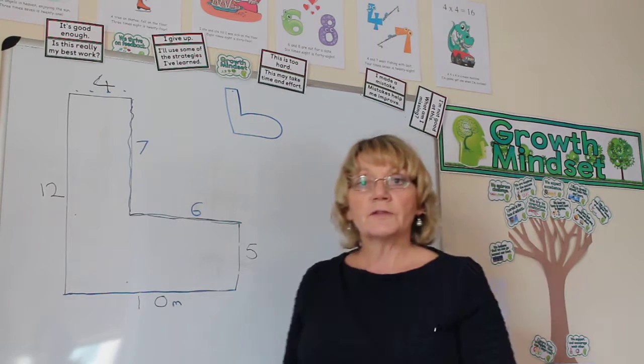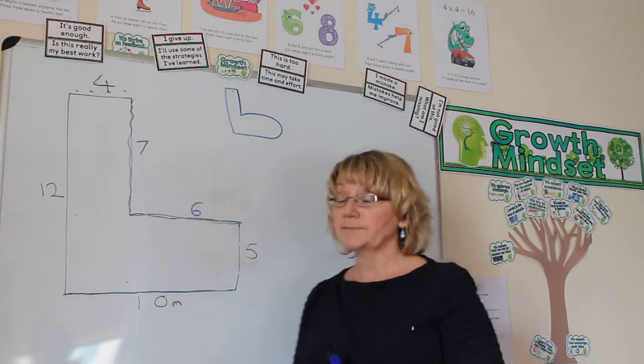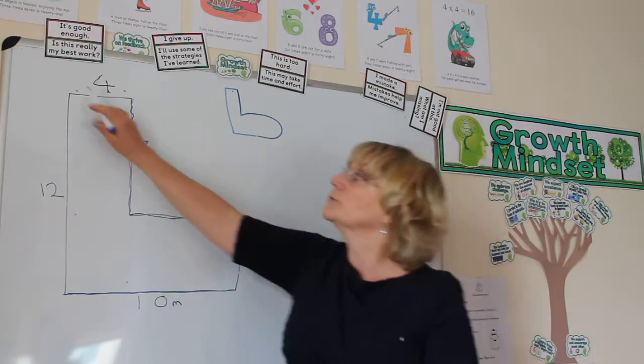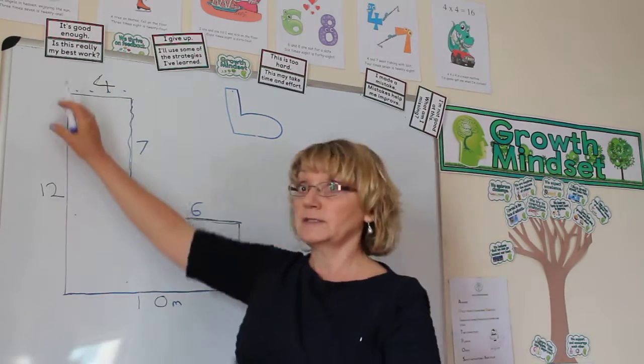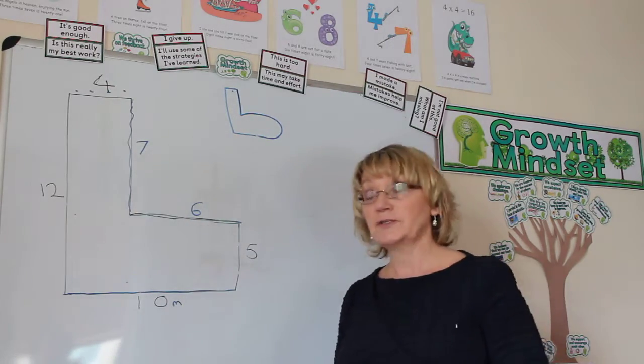So now I've got the perimeter and we've got a cheeky trick. So yes, at school they'll tell you Peter Perimeter walks around, you would do 4, add 7, add 6, add 5, add 10, add 12. But as I've just shown you,